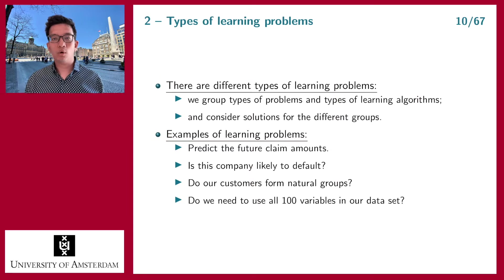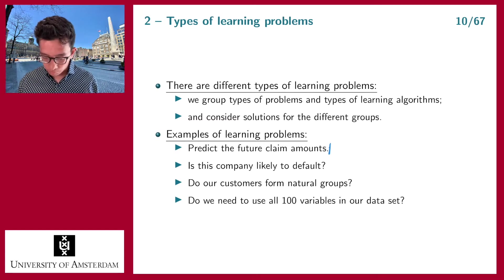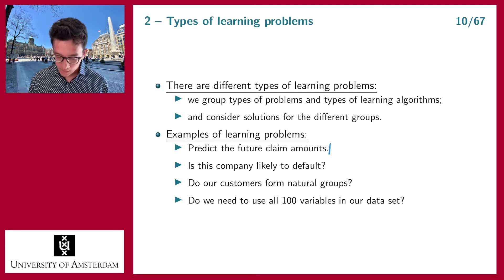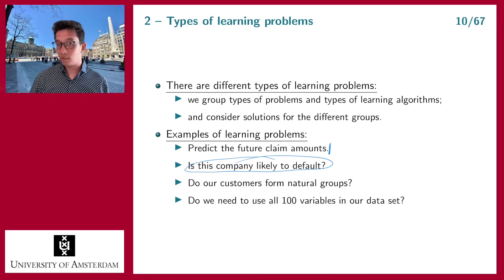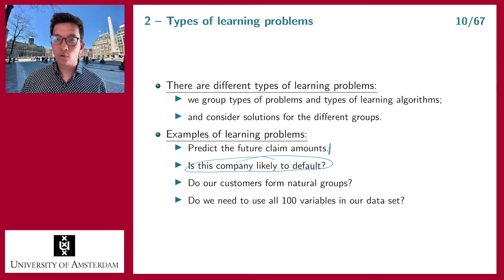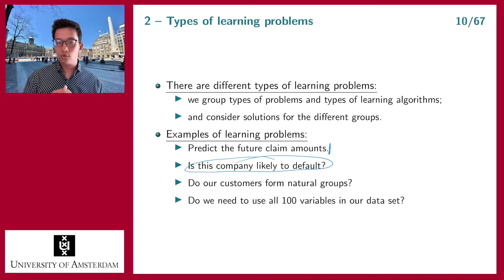There are different types of statistical learning problems. For example, one problem is where you try to predict the future number of claims. Another problem could be trying to understand whether a company is defaulting in the next year — for example, if you buy bonds of a company. That's a relevant question, but it's very different from the first one. In the first problem you try to predict a number: no claims, one claim, two claims, three claims and so on. In the second problem you have only two options: you default or you do not default.